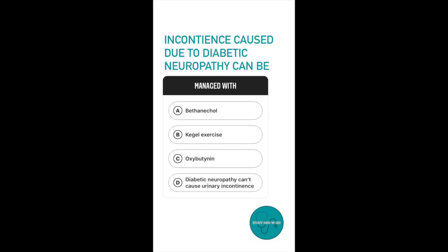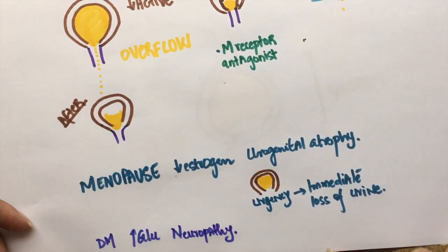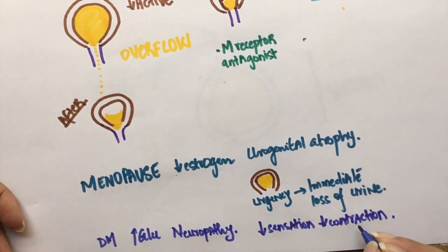Question number four: Incontinence caused due to diabetic neuropathy can be managed with option A, Bethanechol, option B, Kegel exercise, option C, Oxybutynin, option D, diabetic neuropathy cannot cause urinary incontinence. The answer to this question is Bethanechol. Patients with uncontrolled diabetes can have neuropathy. Increased blood glucose can damage nerves. This can lead to decreased bladder sensation and impaired ability of the bladder muscles to contract.